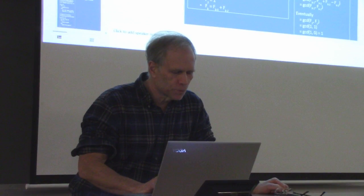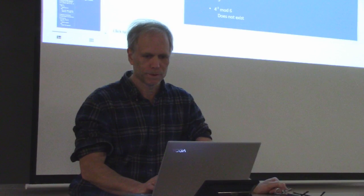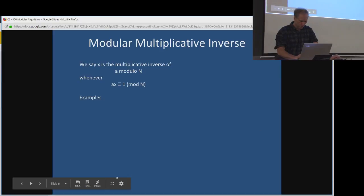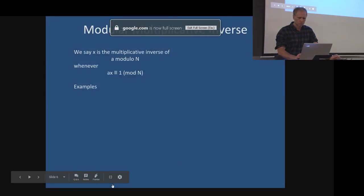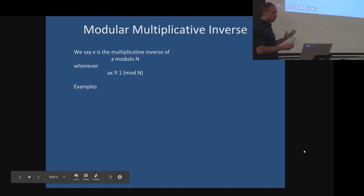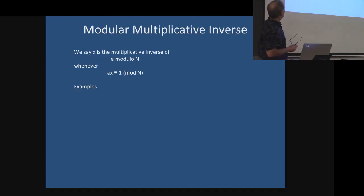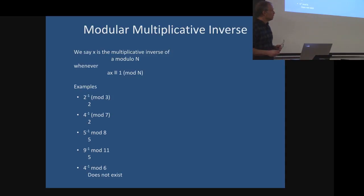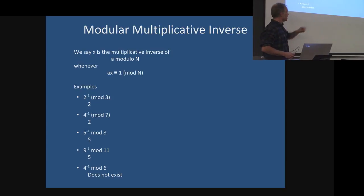Another piece we needed was modular multiplicative inverse — that's what we started on last time and will pick up here. The modular multiplicative inverse of a number A modulo n is some x such that A times x is 1, working mod n.